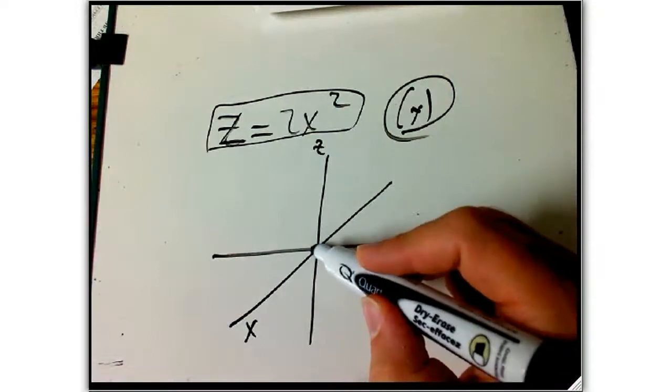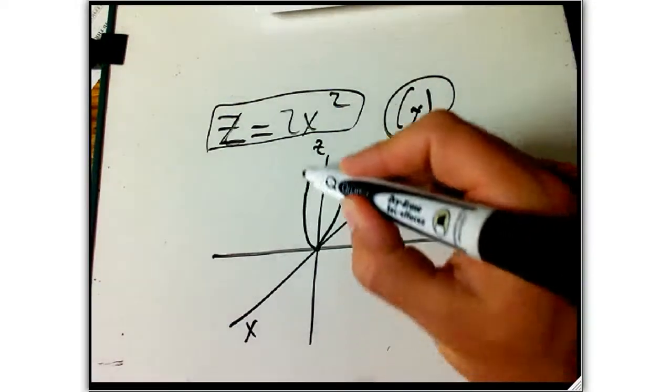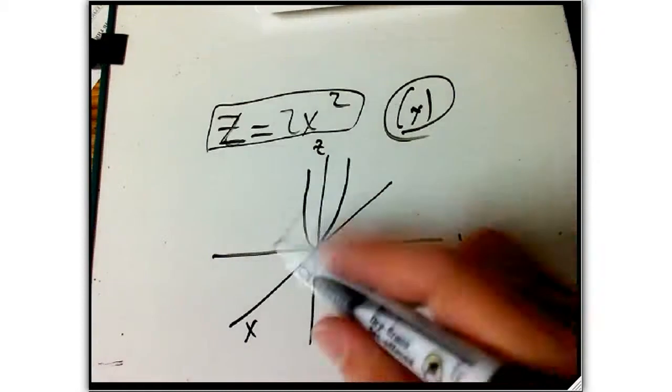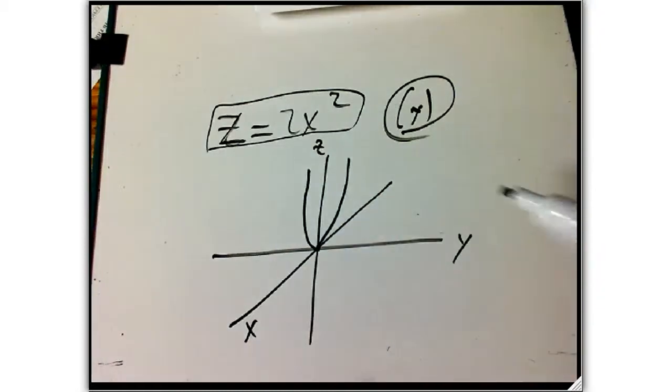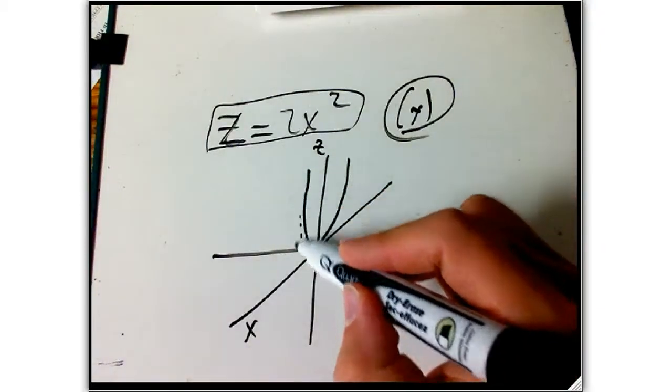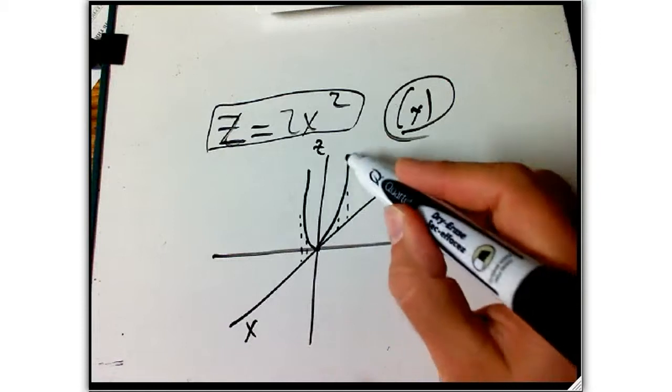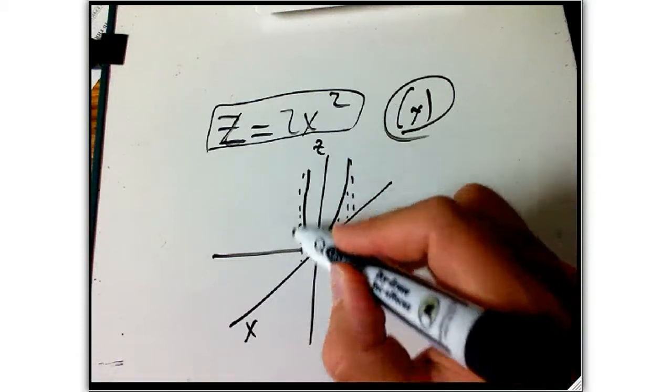And so that's going to be a parabola sort of coming out toward us and going away from us. So I'm going to draw it pretty skinny to indicate kind of the foreshortening effect of being along this axis. If I wanted to really make it clear that it's supposed to be coming out and going towards, we could put these little dotted lines here.